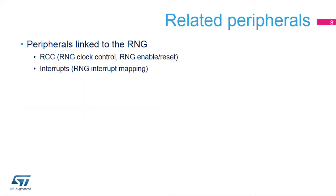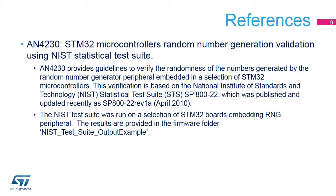This is a list of peripherals related to the random number generator. Please refer to these trainings for more information if needed. For more details, please refer to Application Note AN4230 about using the NIST Statistical Test Suite to validate the random numbers generated by a selection of STM32 MCUs.